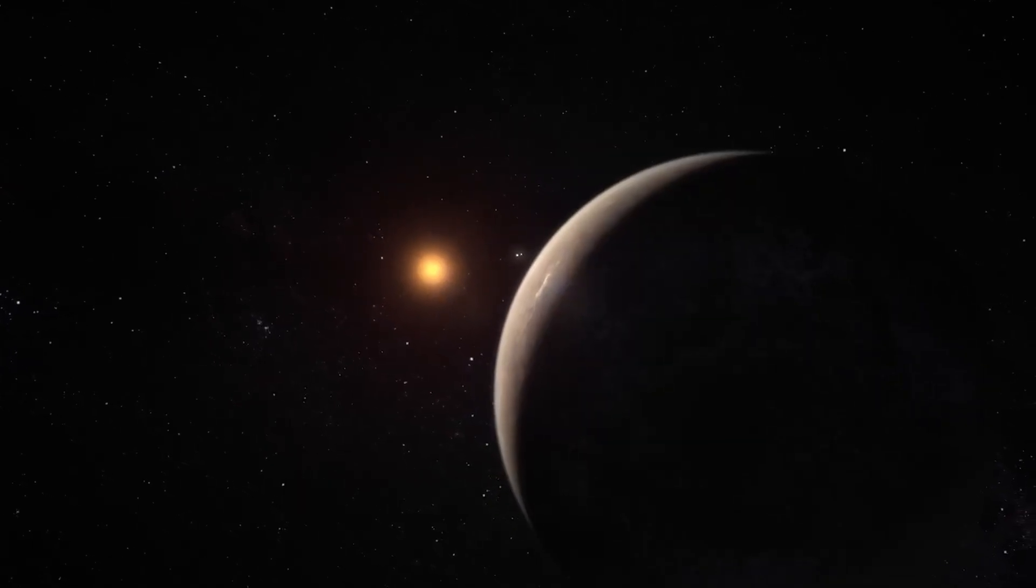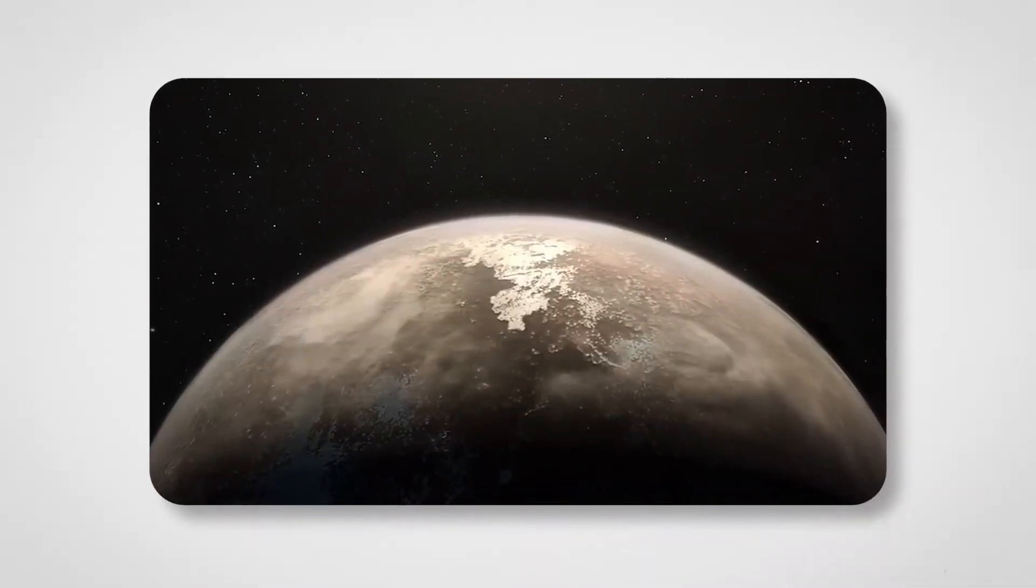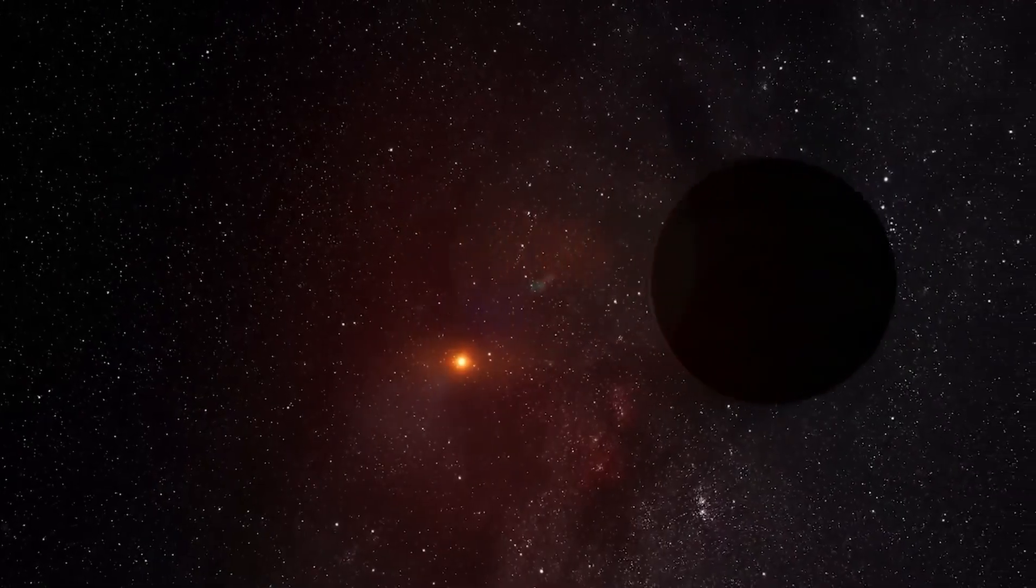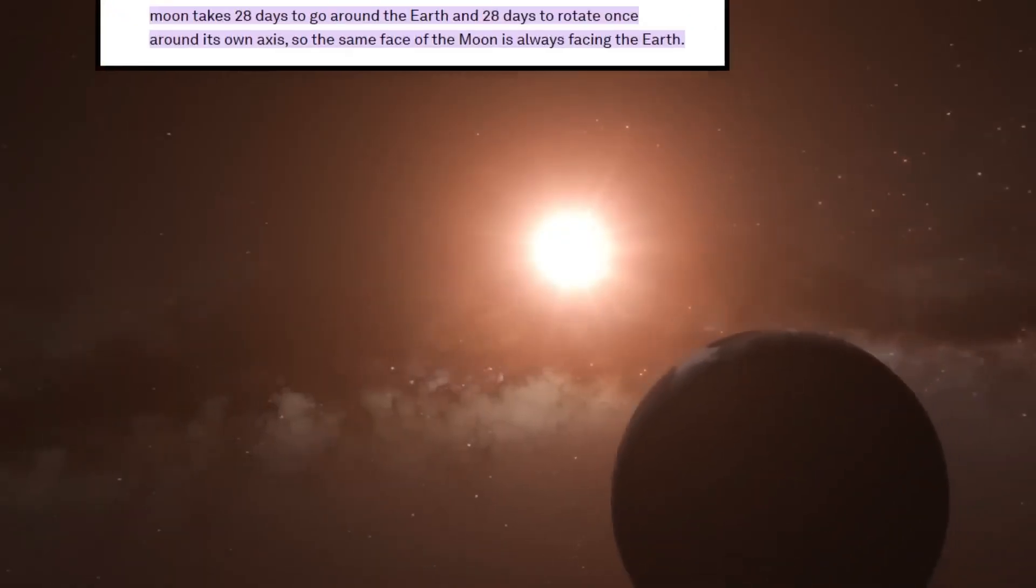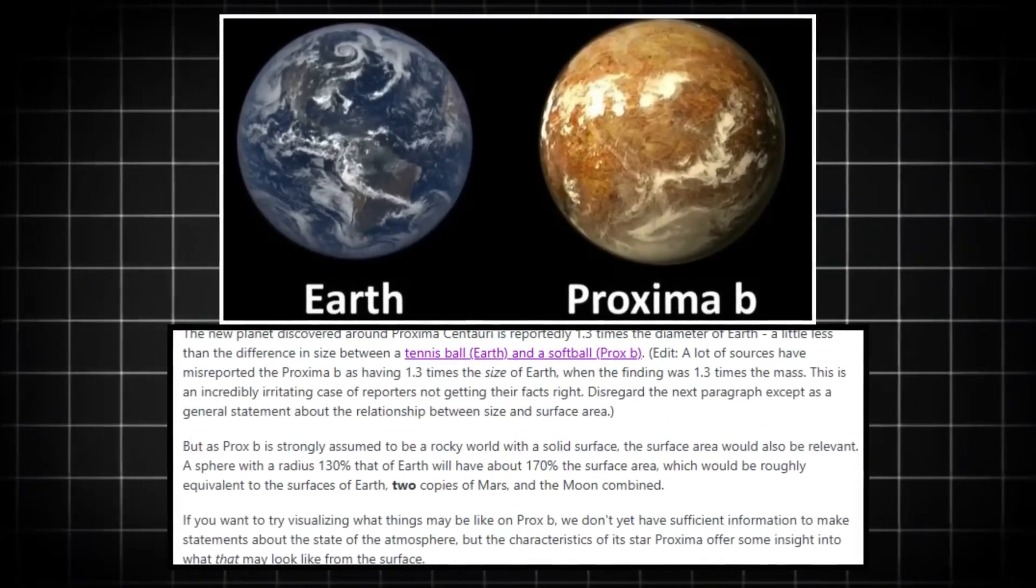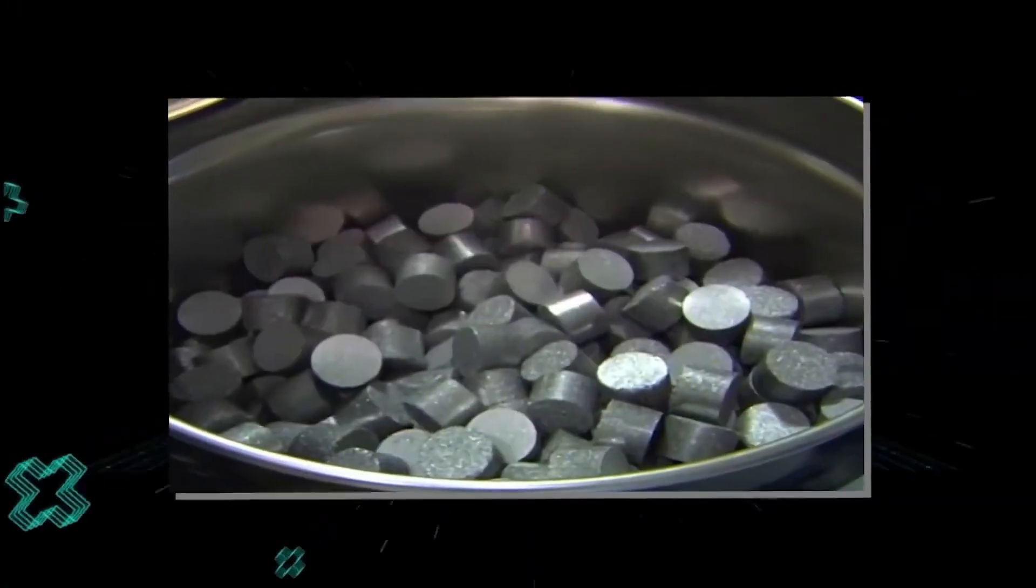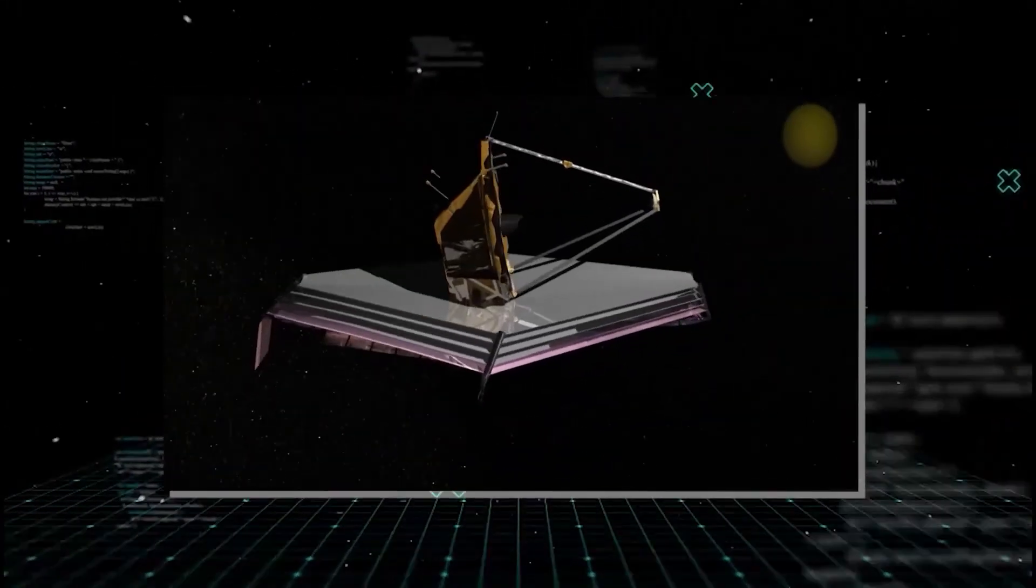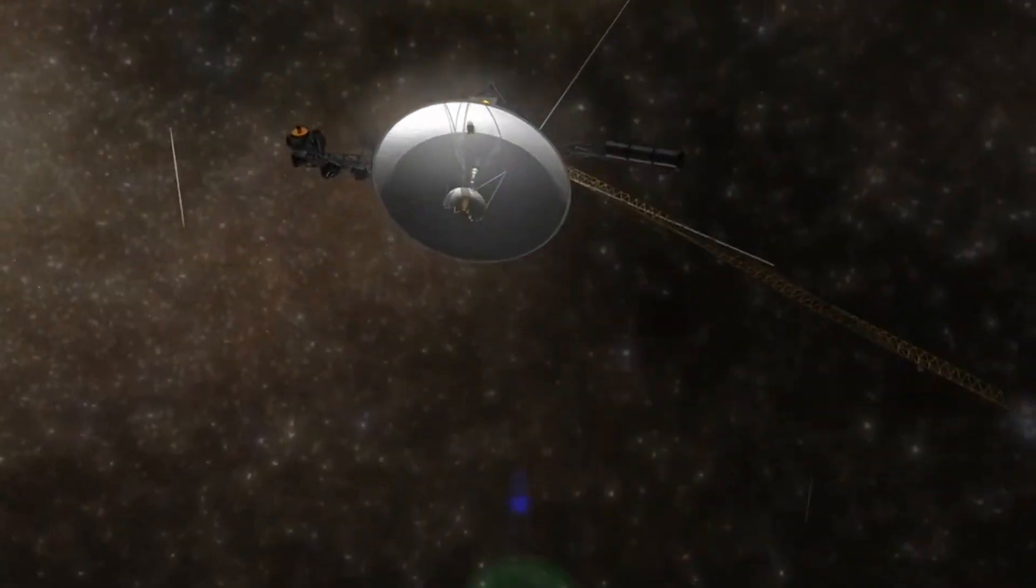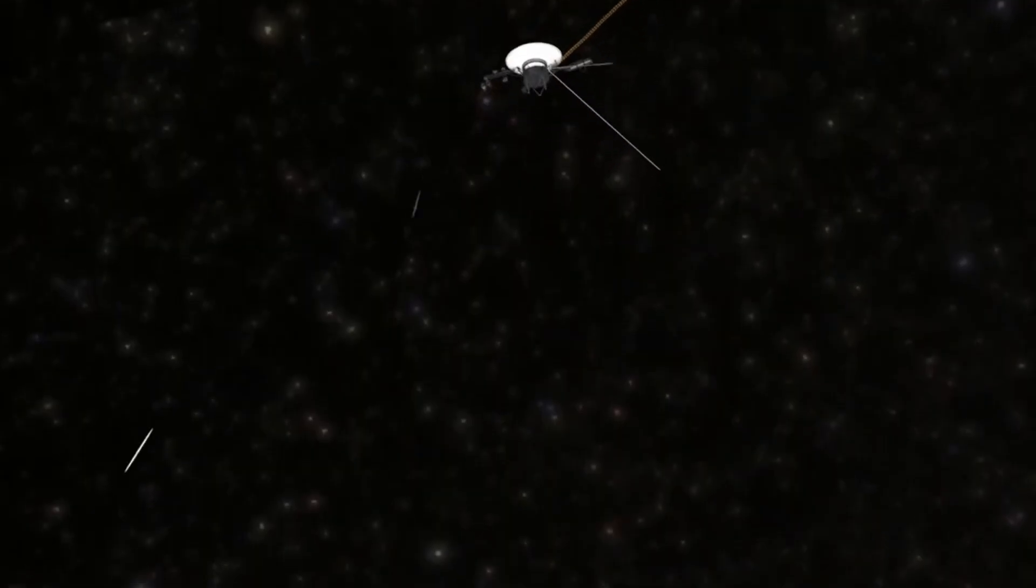In addition to its location in the habitable zone, Proxima b has been a target of intense interest because of its proximity to Earth. At just over four light-years away, Proxima b is within reach of future interstellar missions. Although the technology to send spacecraft to such distant locations is not yet available, scientists are exploring ways to develop advanced propulsion systems that could one day allow humanity to visit or study this intriguing exoplanet more closely. The closest we have come to sending a spacecraft to another star system is the Breakthrough Starshot Initiative, which aims to send tiny light-powered probes to Alpha Centauri in just over 20 years.